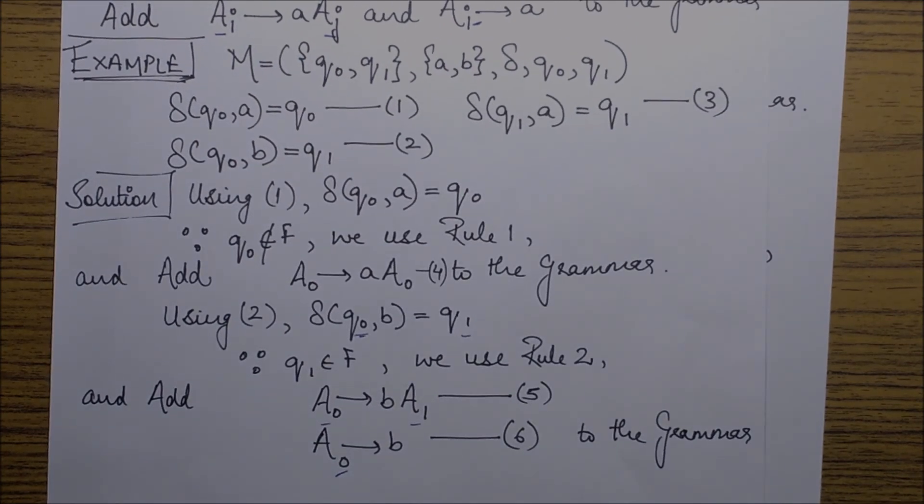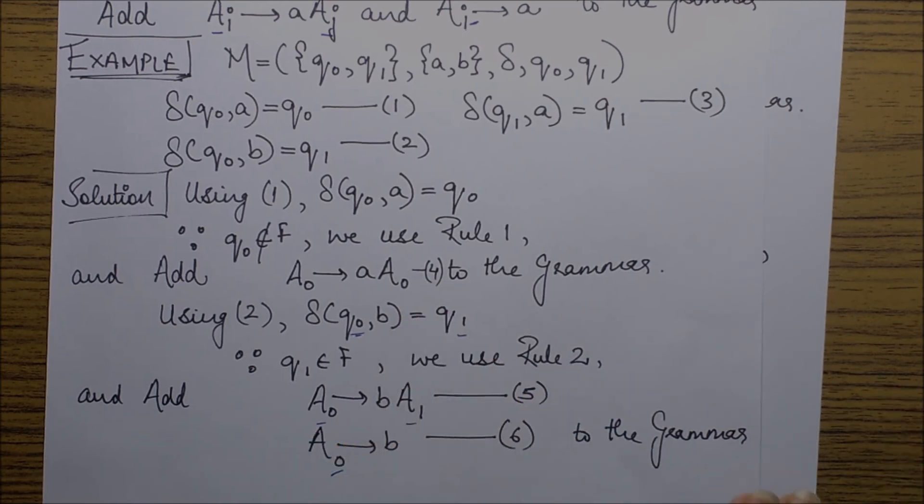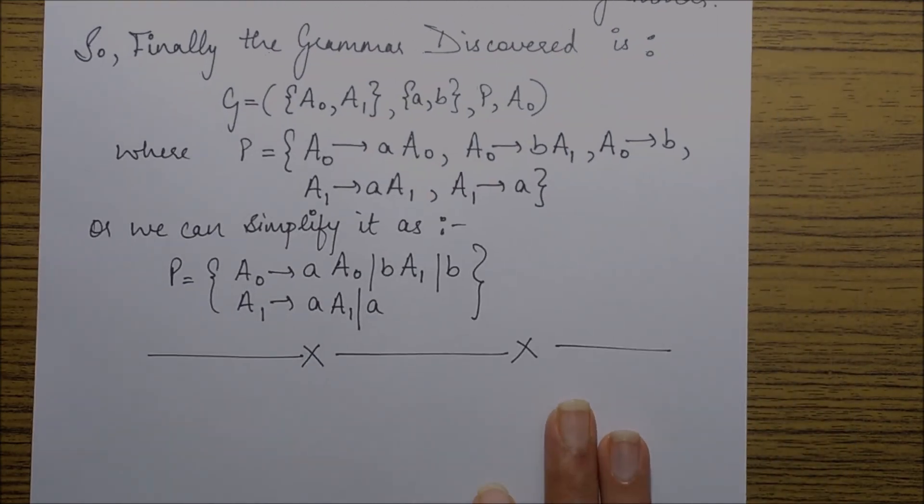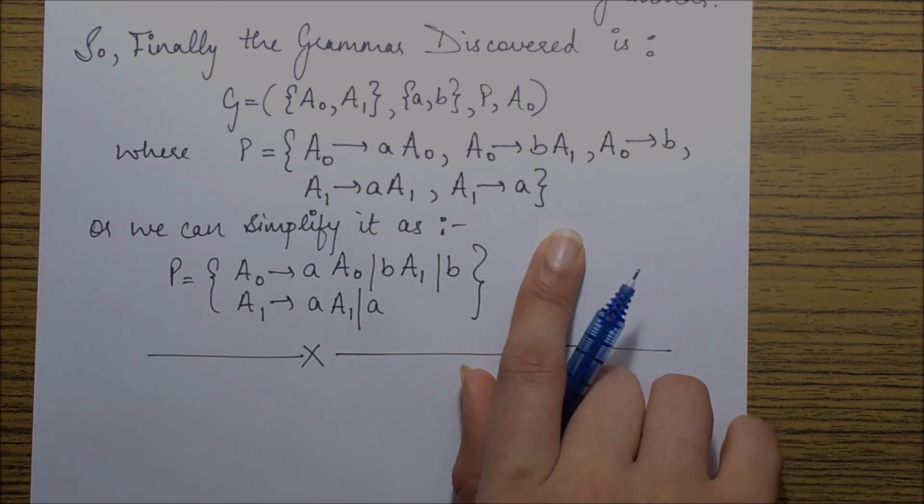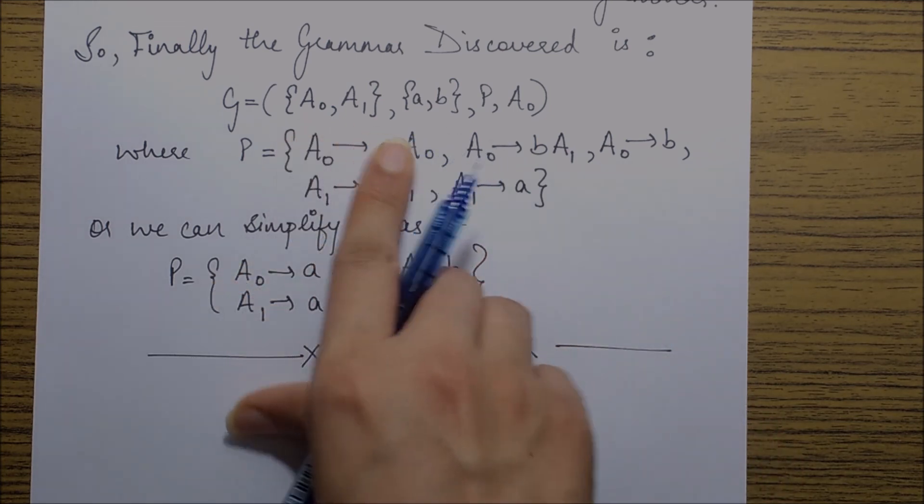The productions defined as equations 4, 5, 6, 7, and 8, which can be simply listed in the form of production set as these. Also we know there are only two variables A naught and A1.